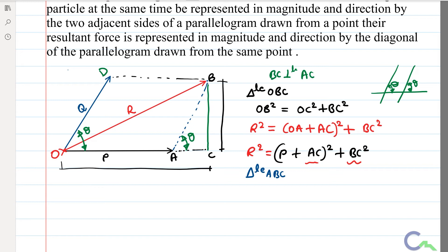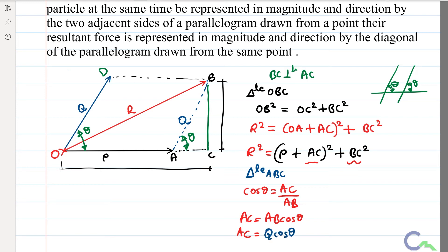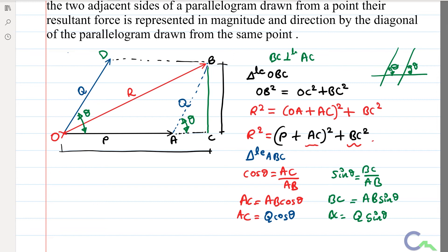Now from triangle ABC, I can write cos theta = adjacent / hypotenuse = AC / AB. So AC = AB·cos theta. Therefore AC = Q·cos theta. At the same time, sin theta = opposite / hypotenuse = BC / AB. So BC = AB·sin theta. Therefore BC = Q·sin theta. I will take this as equation 1.